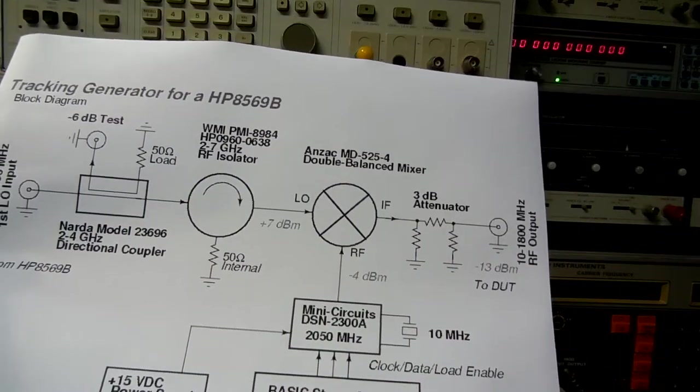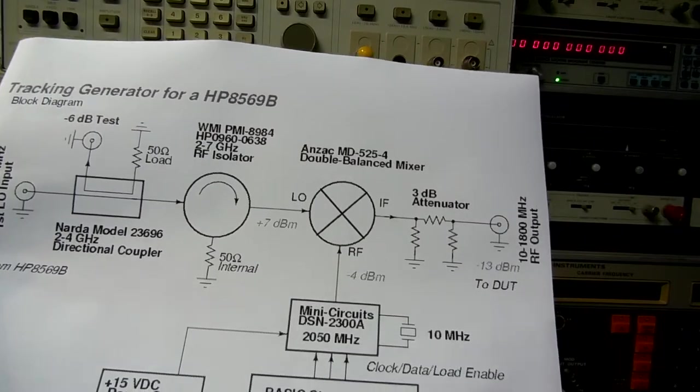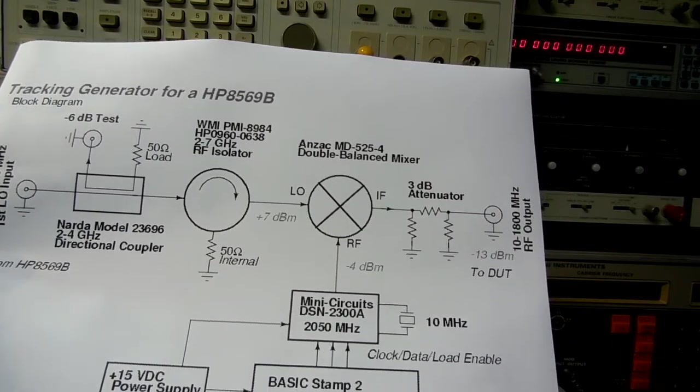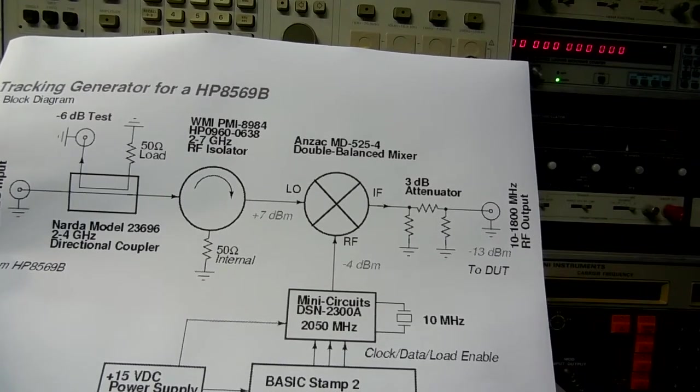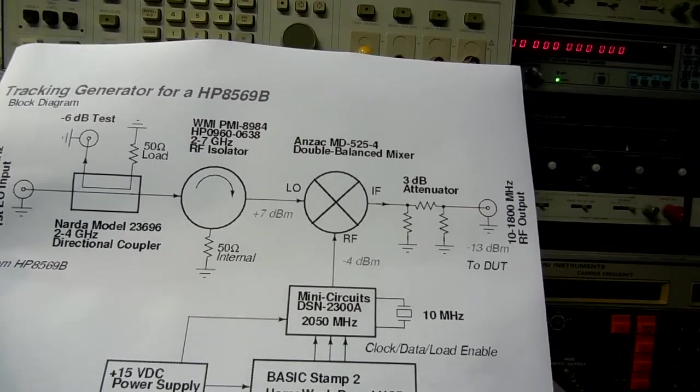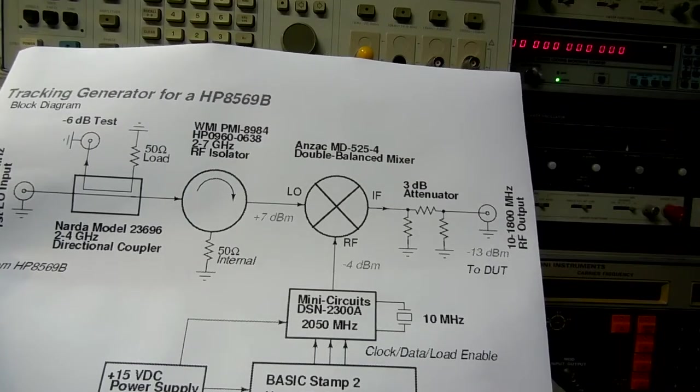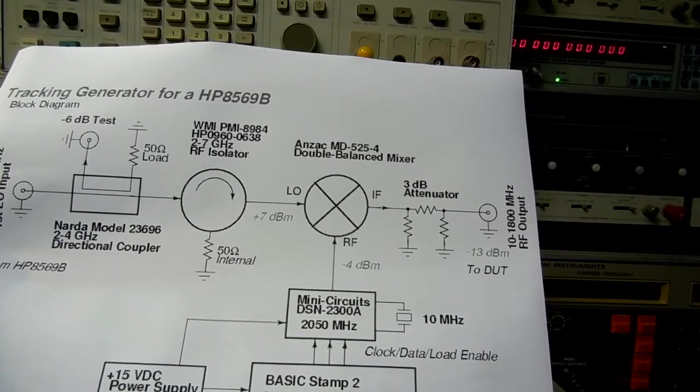This is a project for a tracking generator for HP 8569B Spectrum Analyzer. This turns the spectrum analyzer into a scalar network analyzer which is a device which can plot the frequency versus magnitude response of a device that you're testing.